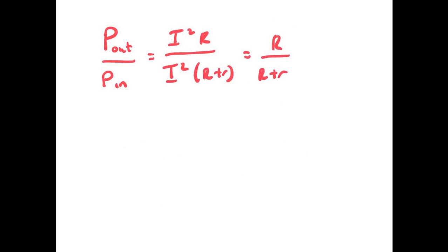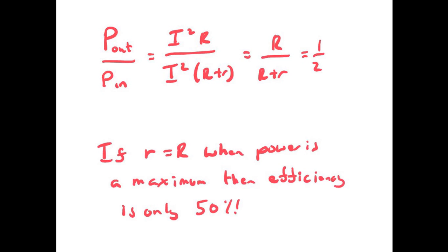And remember these values are equal, so R = r, which means we're going to end up with a half. So when we have our maximum power, our efficiency is only 50%.